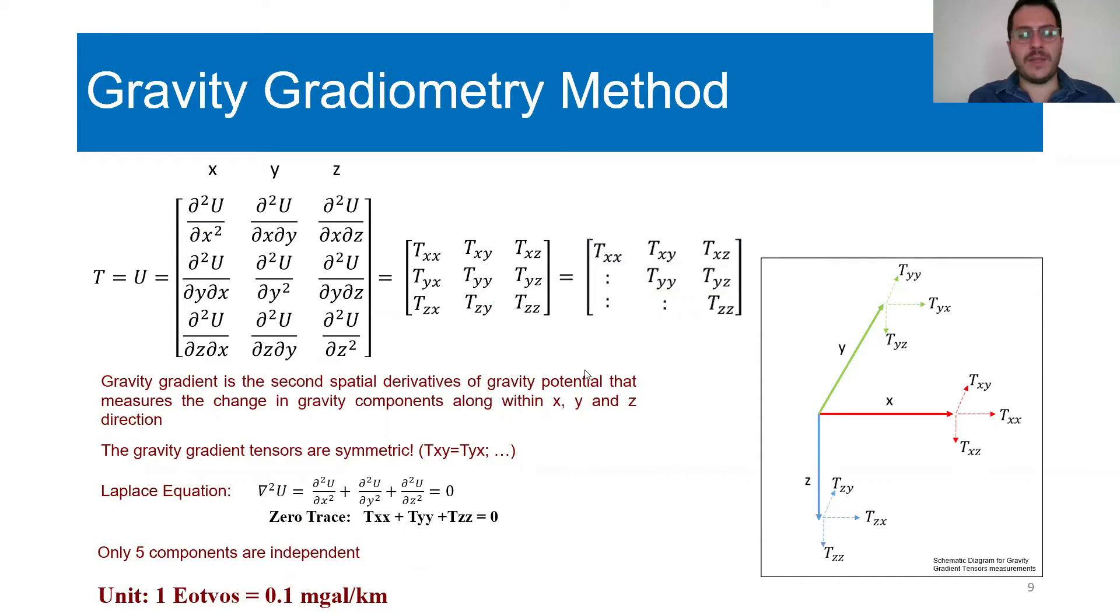For the measurements of the gradients, the units of the measurements is in Eötvös, which is equal to 0.1 milligals per kilometer. On the right figure, you can see the schematic diagram for the gravity gradient tensors measurements.